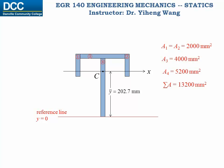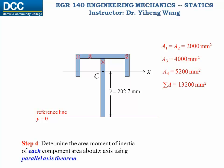We can mark the centroidal x-axis on this composite area, and I kept all the information of the areas on this slide because we will still need that information later. Now step four: determine the area moment of inertia of each component area about the x-axis. To do that, we need to use the parallel axis theorem, which states that if we know the moment of inertia of an area about its own centroidal axis, we can calculate its moment of inertia about any parallel axis by adding the term A·D² to it, where A is its area and D is the perpendicular distance between the two parallel axes.